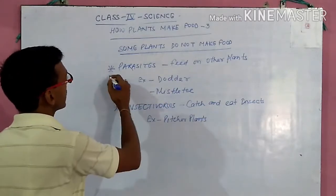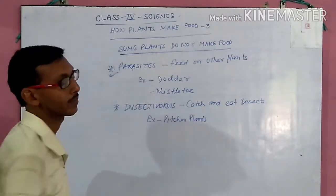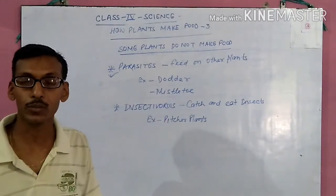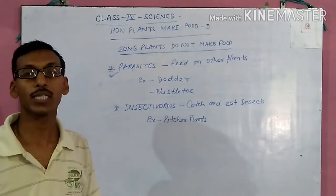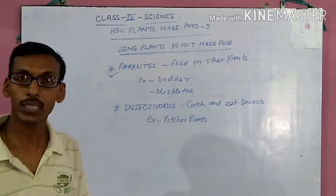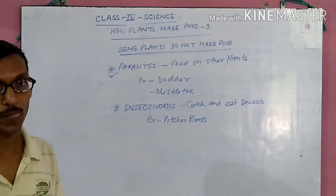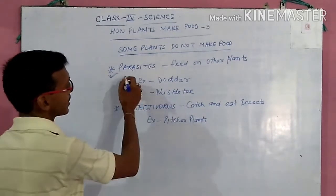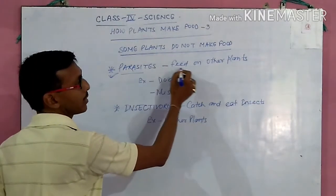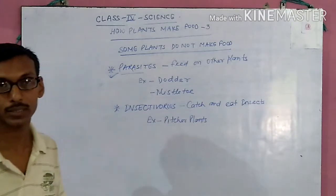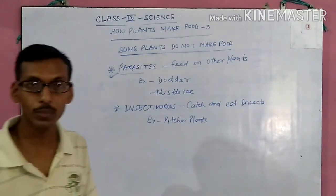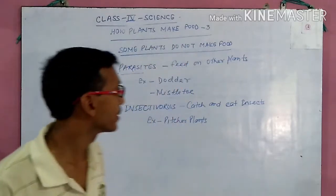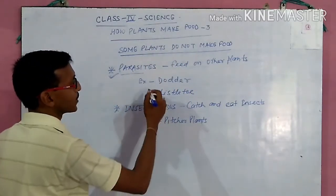The first is parasites. Some plants are parasites. Parasites are those plants that feed on other plants. Some plants feed on other plants and they are called parasitic plants. For example, dodder.